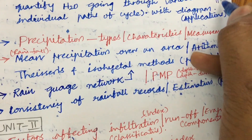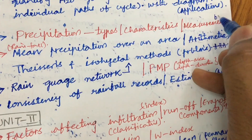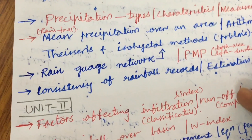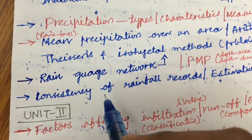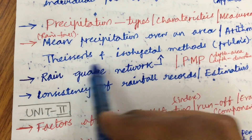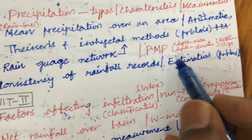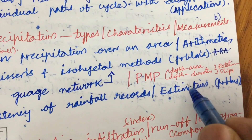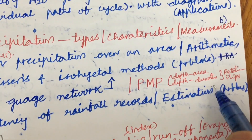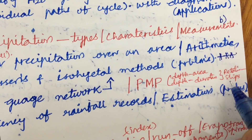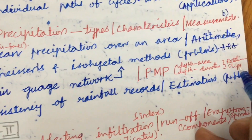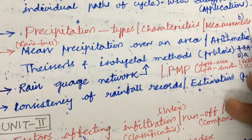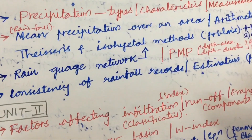We can expect this as question 1a and 1b, and later 2a and 2b. Also, the rain gauge network, PMP, depth-area relationship, as well as depth-deviation relationship need to be worked out. Make sure to work out these things — this may be the 2a question from this part, along with a problem based on it.